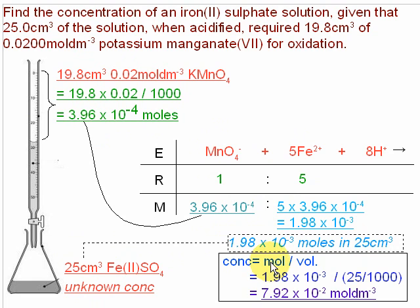We can work out the concentration by taking the amount and dividing by the volume. To convert the volumes into dm³, I divide by 1000. So the concentration of the Fe2+ was 7.92 times 10 to the minus 2 moles per dm³.